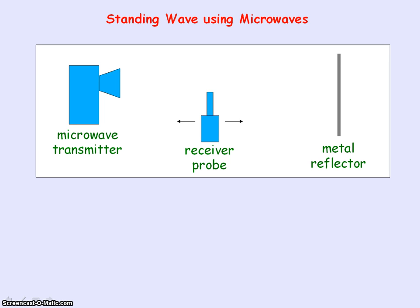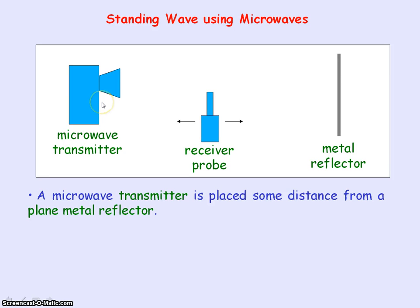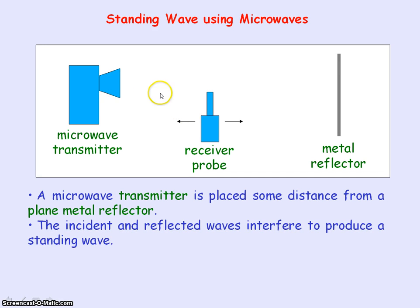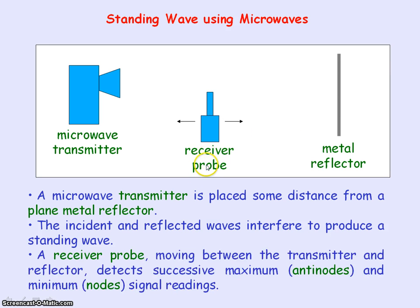Finally, you need to know an experiment that demonstrates standing waves using microwaves. A transmitter of microwaves is placed some distance from a metal reflector. The transmitted microwaves are reflected off the metal plate, so the incident and reflected waves of the same frequency travel in opposite directions, interfering to produce a standing wave between the transmitter and the reflector. Moving a microwave receiver probe between the transmitter and the reflector, at certain positions the probe detects maximum signals representing the antinodes, and between successive maxima the probe detects minimum signals representing the nodes of the standing wave.